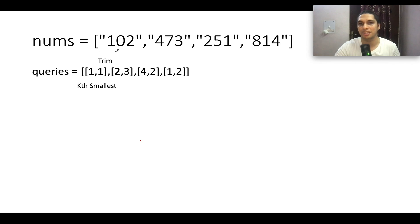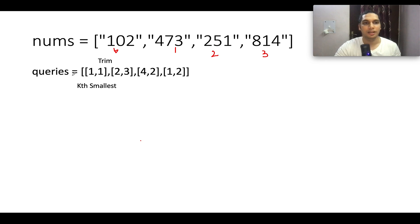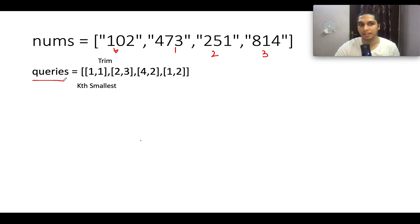We have the nums array as 102, 473, 251, and 814. Let me write the indexes at which these elements occur: 102 is at index 0, 473 is at index 1, 251 is at index 2, and 814 is at index 3. Now let's understand the second aspect, which is the queries array.